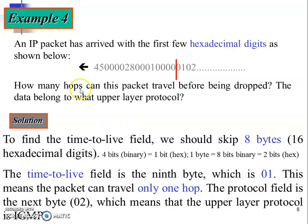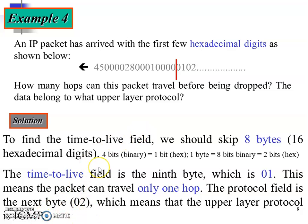The packet can take only one hop. For the protocol field — the next byte after TTL — the value is 0 2. Two hexadecimal digits equal 8 bits in binary, and the protocol field uses 8 bits. Protocol 0x02 belongs to IGMP. So the answer for the upper-layer protocol is IGMP.